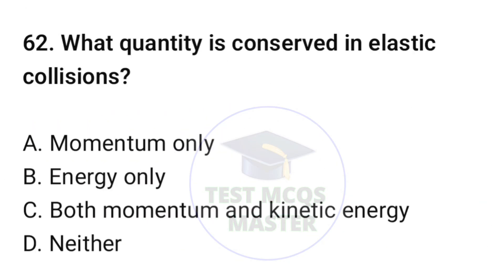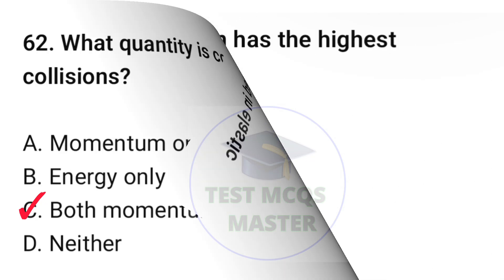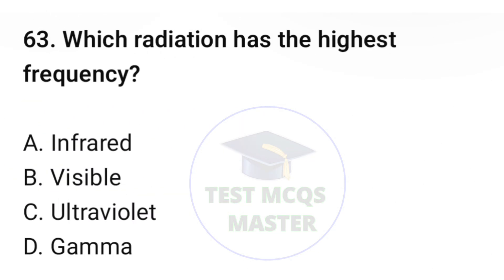Question number sixty-two: what quantity is conserved in elastic collisions? The correct option is C, both momentum and kinetic energy. Question number sixty-three: which radiation has the highest frequency? The correct option is D, gamma.